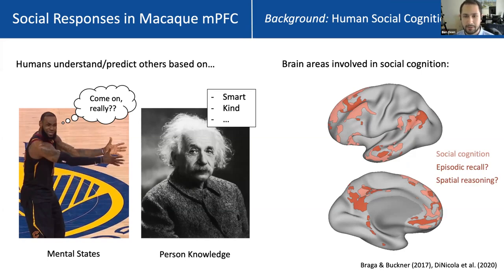In humans, based on functional connectivity and task data, you can find multiple interdigitated sub-networks of the DMN — one of which is involved in social cognition, another which has been argued to be specialized for episodic recall, and by others to be specialized for spatial reasoning or navigation.